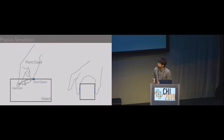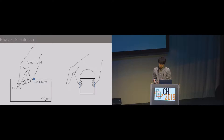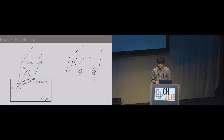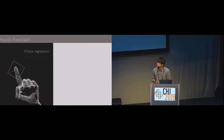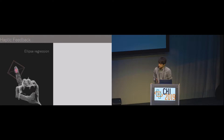When touching with two fingers, if the forces applied by each finger are balanced, the object can be picked up. The point cloud is also used to determine where to present haptic feedback. As I said before, our system moves the sound focus around the cross-section of the finger and the object.